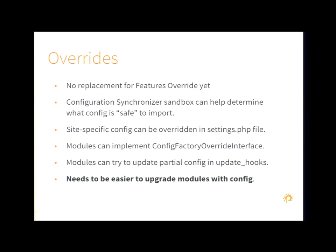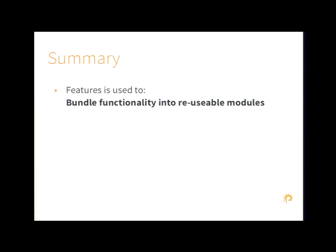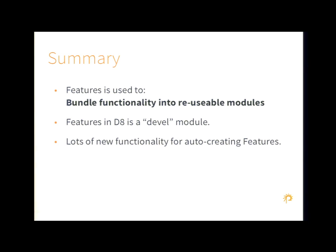So summarizing features: features is used to bundle functionality — it's not configuration management anymore, and this is a good thing. Features in D8 is a developer's module; you do not need it on production. It's intended for people creating feature modules. You don't need it to use a feature module because a feature module is just a normal everyday Drupal module. It has new functionality: bundling, auto-packaging, assignment plugins, and lots of cool stuff. And like CMI, it actually now just works.